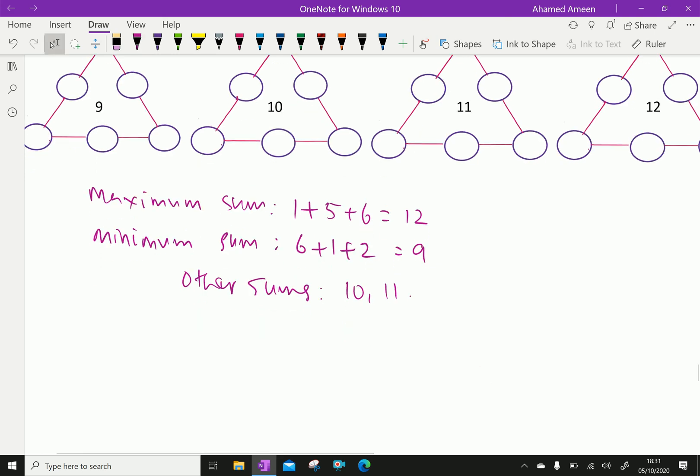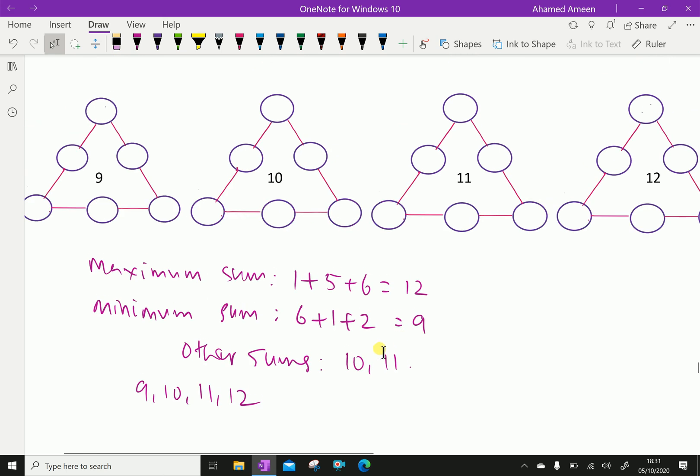Therefore, four possible magical numbers are 9, 10, 11, and 12. Now we got here the magical number, that is the sum we got. Now, let us fill the magical triangle like this procedure.